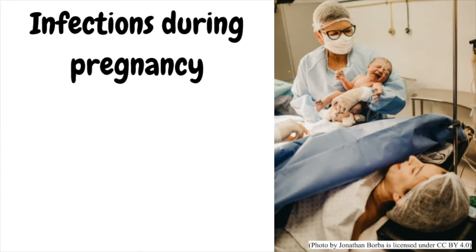Infections during pregnancy can lead to increases in certain proteins called cytokines that circulate in the brain and blood of the baby during pregnancy. Cytokines cause inflammation, which can lead to brain damage in the baby. Fever in the mother during pregnancy or delivery also can cause this problem. Some types of infection linked with CP include viruses such as chicken pox, rubella, German measles, and cytomegalovirus (CMV), and bacterial infections such as infections of the placenta, fetal membranes, or maternal pelvic infections.